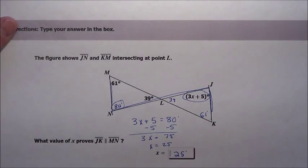So in the blank here, x must be 25. That has to be the value for x in order for these lines to be parallel.